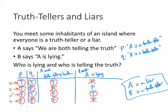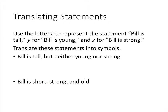That's how you break these problems down. Next we'll practice translating from English statements to symbolic statements. We use the letter T to represent 'Bill is tall,' Y for 'Bill is young,' and S for 'Bill is strong.' We'll use the upside-down V shape for AND, the V shape for OR, and the minus sign with a hook on the end for NOT.